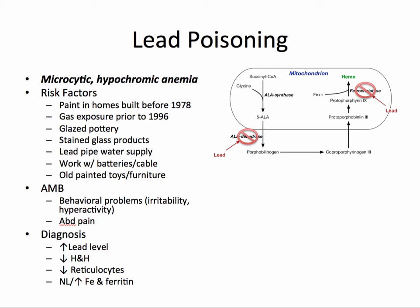Lead poisoning is often manifested by behavioral problems such as irritability and hyperactivity, as well as abdominal pain. In the lab work, you'll see a decreased hemoglobin and hematocrit, a decreased reticulocyte count, and an elevated lead level.